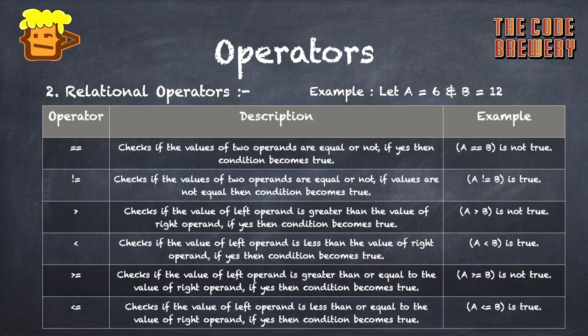The second type is relational operators. Here we also let A equal 6 and B equal 12. The double equal-to operator checks if the values of two operands are equal; if yes, the condition is true, otherwise false — A == B is not true here. The not-equal-to operator (!=) checks if two operands are unequal; if they are not equal, the condition becomes true — A != B is true.